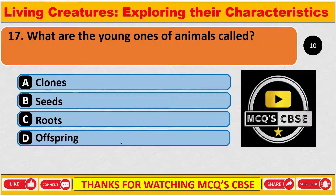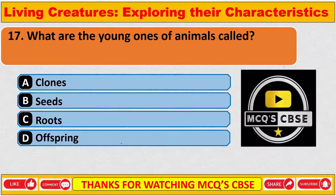What are the young ones of animals called? The correct answer is D — offspring.